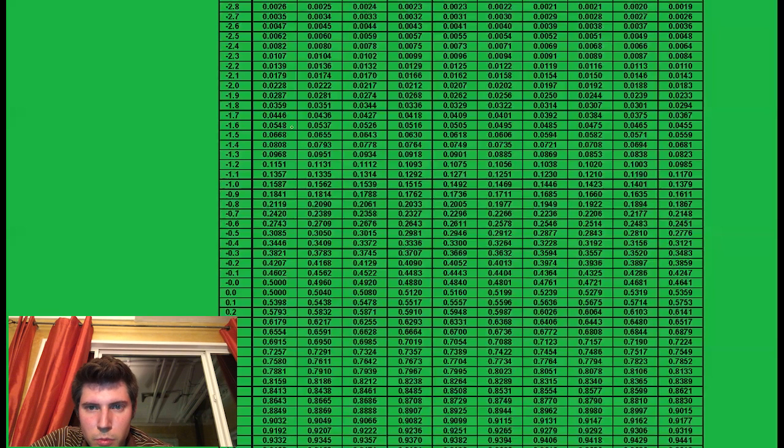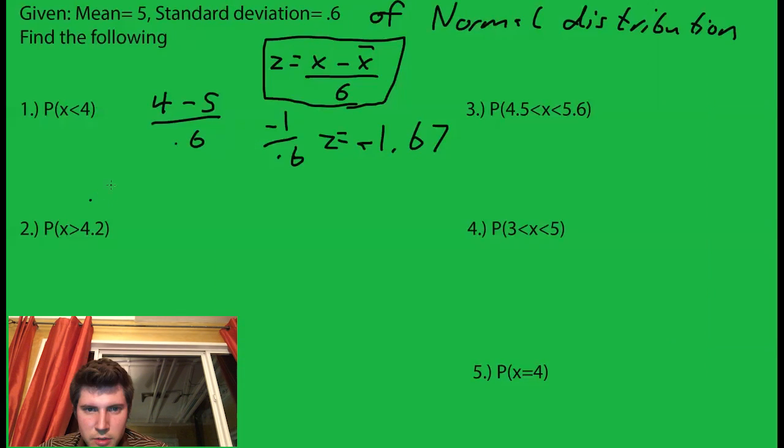So now we go to the table and look at negative 1.67. That gives us 0.0475, and the z score always returns less than and this right here is asking for less than, so we are done. This is the probability that x is less than 4 on a normal distribution with the mean of 5 and standard deviation of 0.6.